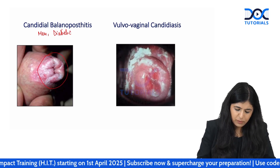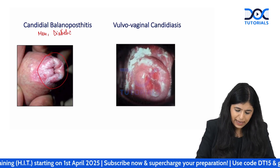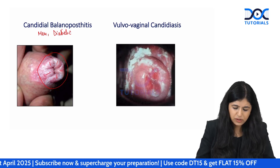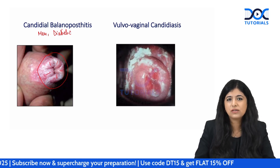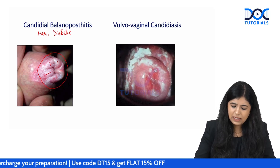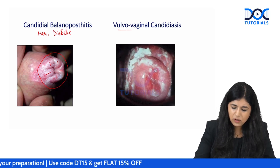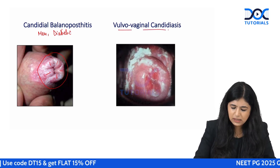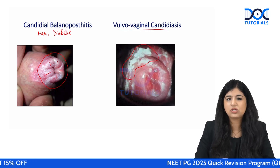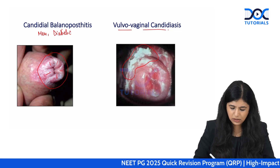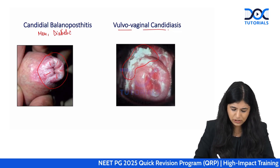Candidal balanoposthitis can develop in diabetic men, presenting with redness and swelling of the prepuce, and sometimes longitudinal fissures on the prepuce. In women, candida causes vulvovaginal candidiasis with a typical thick white curdy discharge associated with itching.